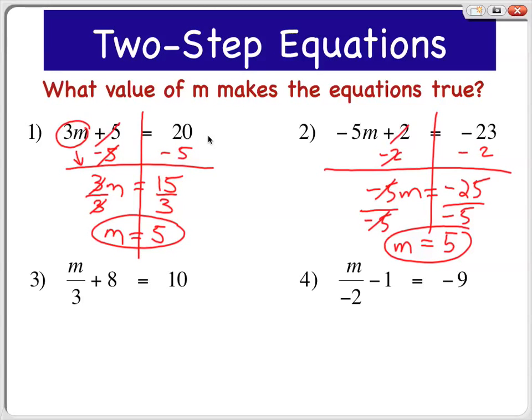Let's try these two on the bottom, number 3 and number 4, that involve a fractional coefficient. Here it says m divided by 3 plus 8 equals 10. I'm going to look at the side with the variable, the left side, and I always start by either adding or subtracting. So in this case, I'm going to subtract 8 from both sides.